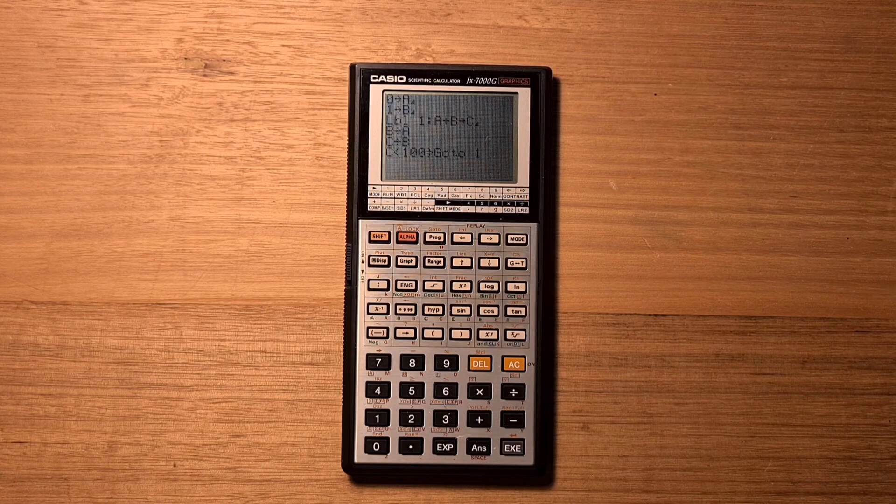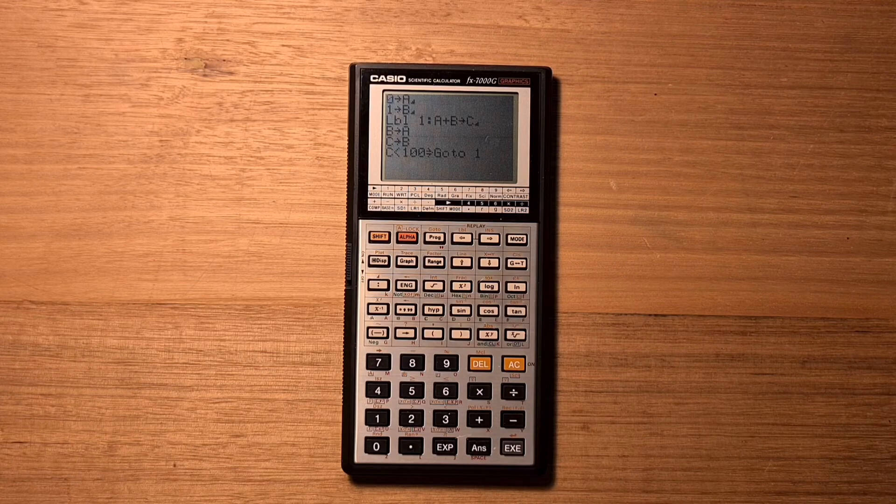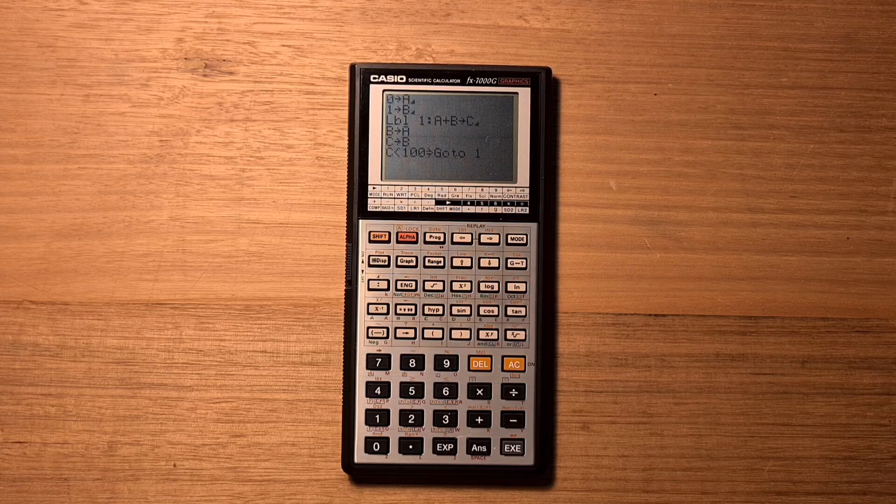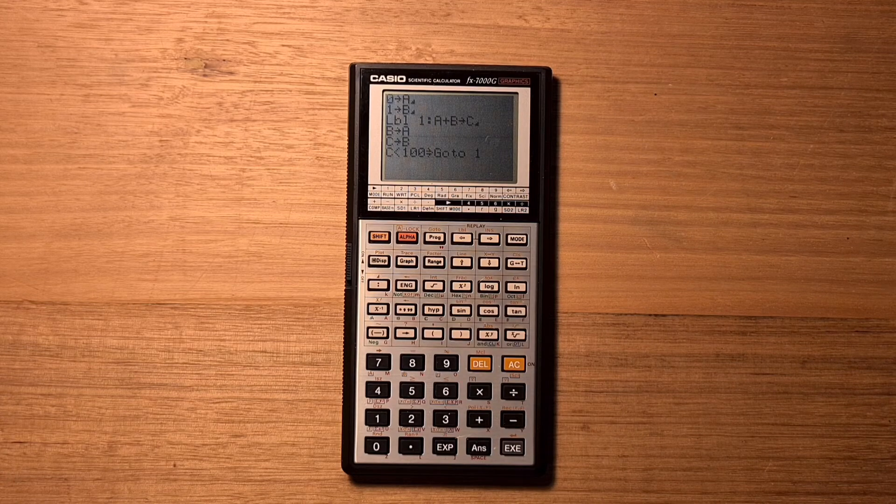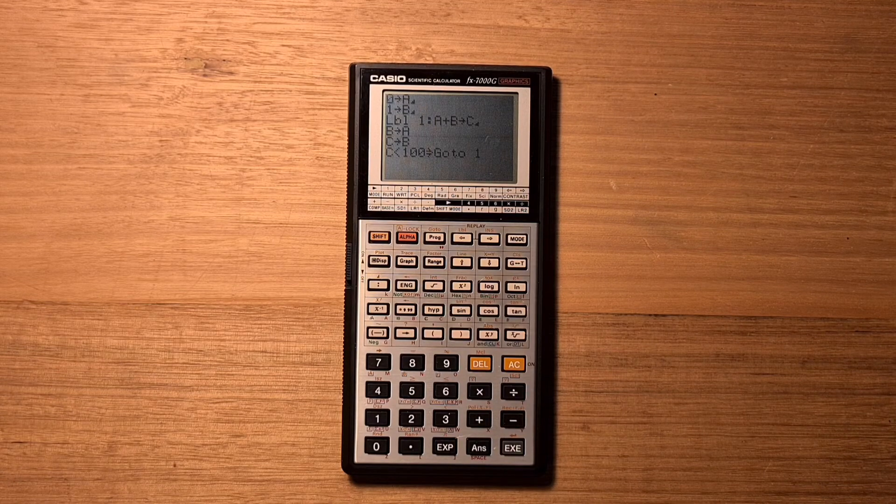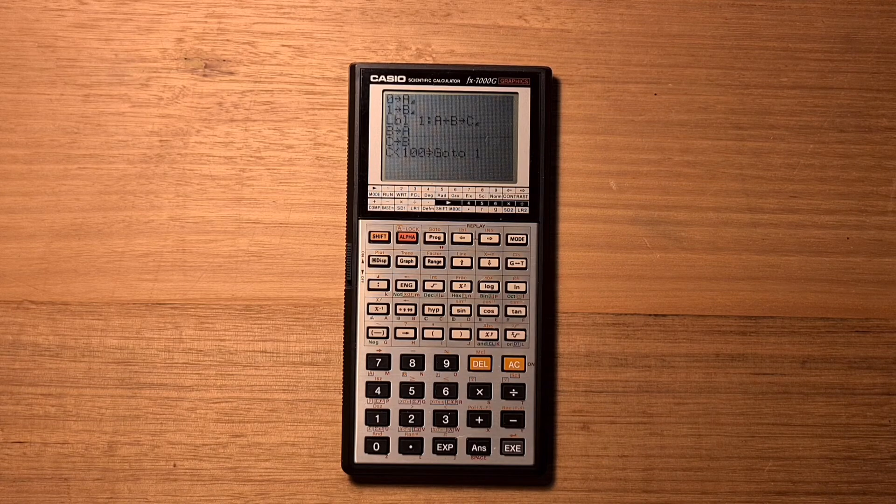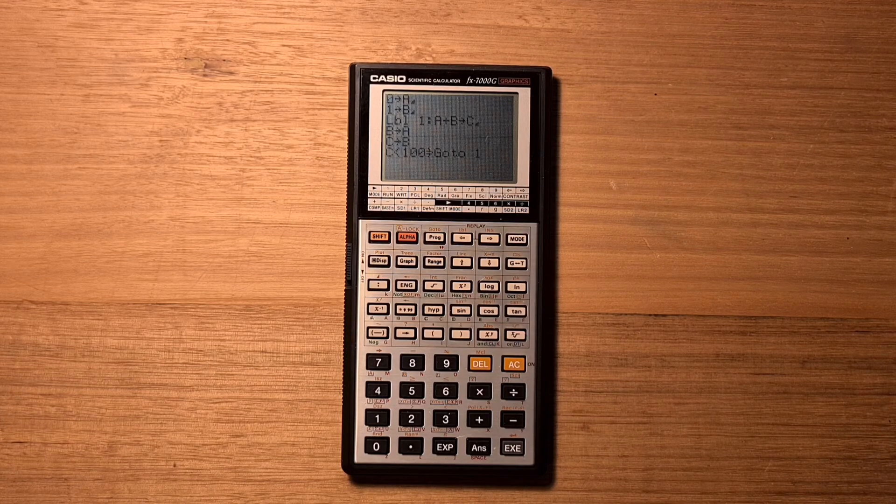you would need to re-enter any programs you had saved, for example. But partly because it used the small coin cell batteries, Casio was able to make it very thin and light compared to modern graphing calculators that often take double A's.